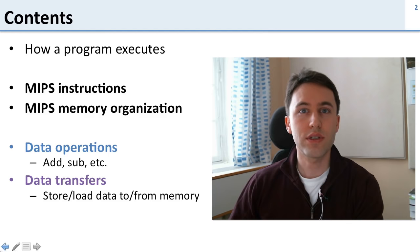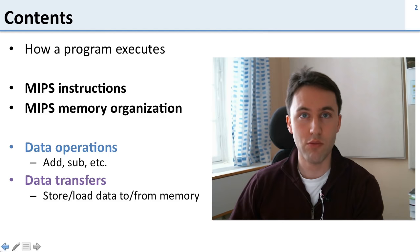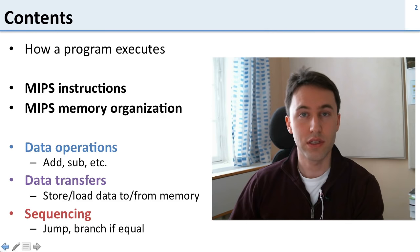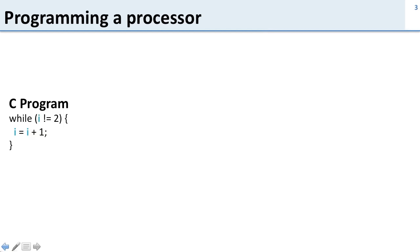The next class is data transfers. These are instructions that move data around in the processor — in particular, they move data from the main memory to the register file and back. Then we'll talk about the last class of instructions for sequencing: these are the instructions used to control the flow of the program, such as if-then-else and loops. Today we're going to cover the instructions in general and then talk in detail about these three particular types.